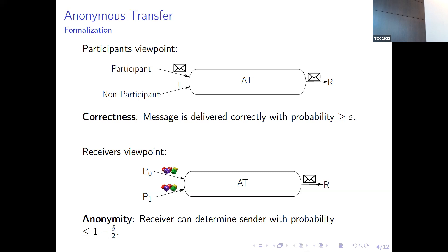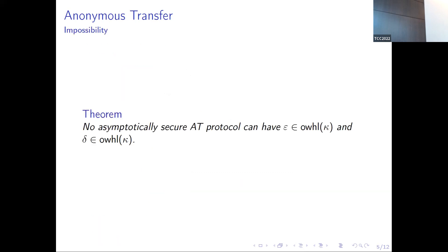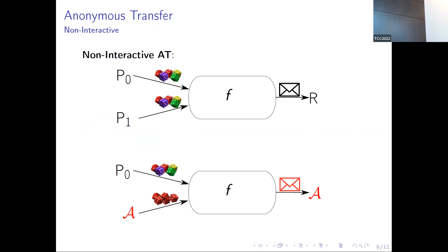Preferably, we want both ε and δ to be relatively close to 1, so the message is transferred correctly but the sender remains anonymous and the best the receiver can do is guess. Unfortunately, it is not possible to have both of them overwhelming in the security parameter — either correctness or anonymity must be suboptimal. In the easiest case of a non-interactive anonymous transfer, there are just two parties who each insert a single message and then a reconstruction function lets the receiver recover the bit. In the synchronous communication model, the actual sender's message must be independent of the other party's message.